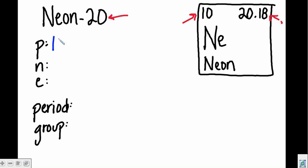Protons is the whole number. When I have 10 protons, I then have 10 electrons. And to calculate my neutrons, I take my mass number given and subtract, giving me 10 neutrons. Neon can be found in period 2 and it is in group 8.